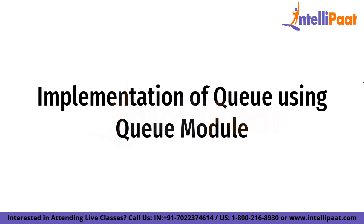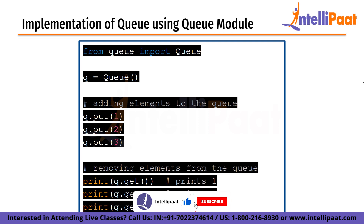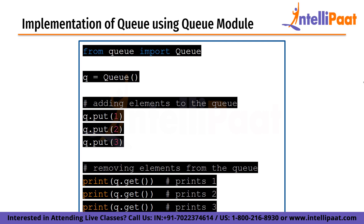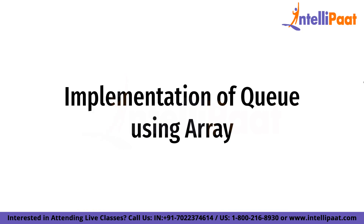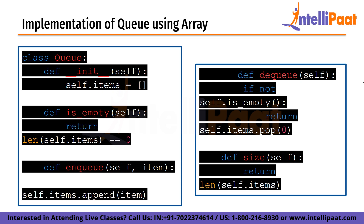In Python, a queue can be implemented using the queue module, which provides a queue class that implements a synchronized queue. The queue class supports both FIFO and LIFO queues. We create an instance of the queue class, add elements using the put method, and remove elements using the get method, which returns the first element added. Alternatively, we can implement a queue using an array, defining enqueue using append and dequeue using pop. The isEmpty method checks if the queue is empty and the size method returns the number of elements.